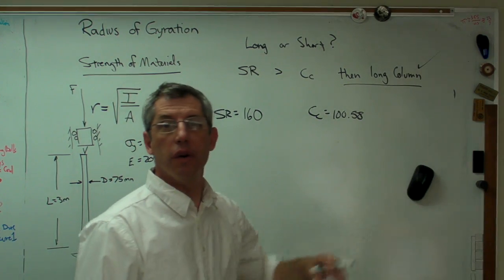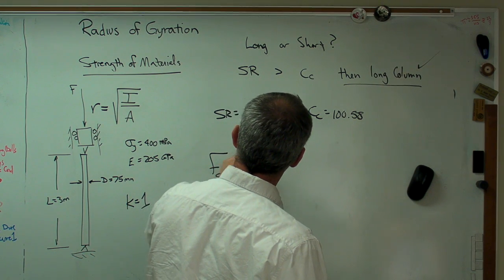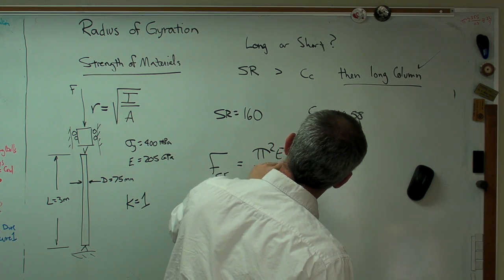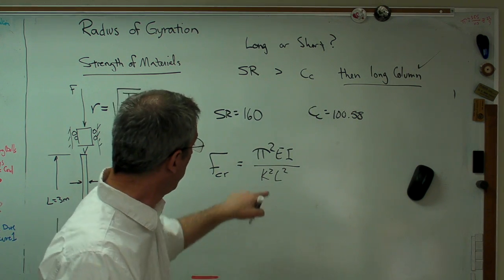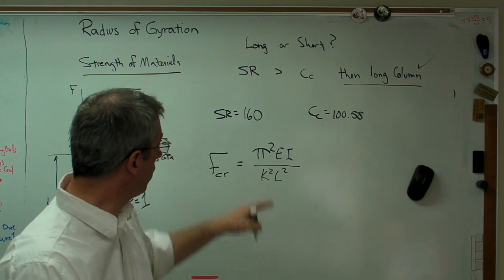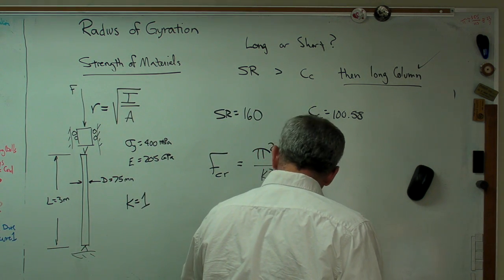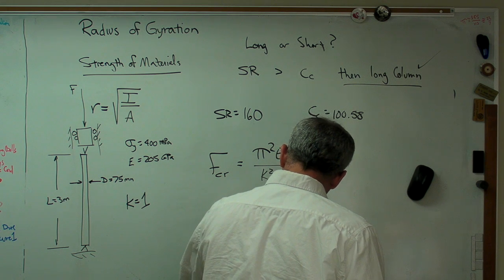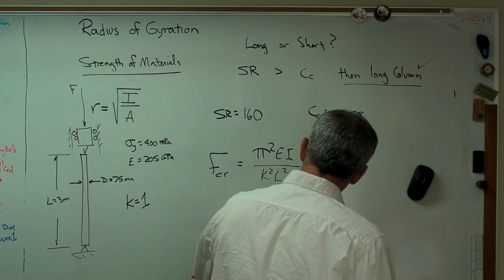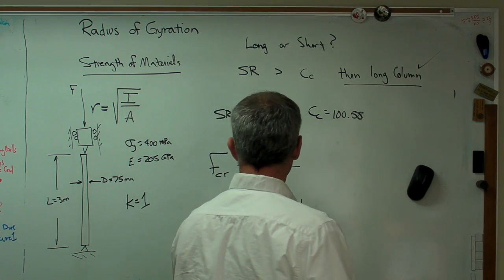Last thing we need to know is the buckling load. Well, the critical buckling load is pi squared EI over K squared L squared. All right. We already know that's 1. That's just a number. We know that. We know that. We know that. We're good to go. All we have to do is plug numbers in there and generate a value. And when you work this out, you get 34,916.0. It's actually 161, but I'm working to five significant figures. So there we go.